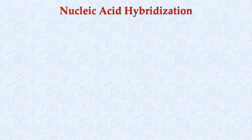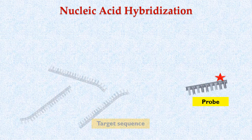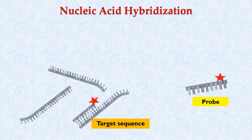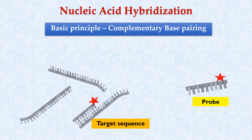In the previous video, we understood the concept of nucleic acid hybridization and probes. We learned that the basis of nucleic acid hybridization is the complementary base pairing.